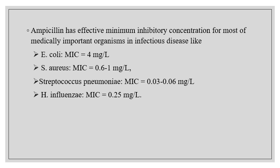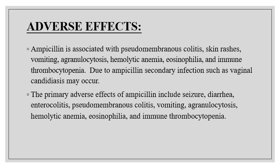Ampicillin has effective minimum inhibitory concentrations for most organisms. For E. coli, the MIC is 4 mg/L. For Staph aureus, the MIC is 0.6 to 1 mg/L. For Streptococcus pneumoniae, MIC equals 0.03 to 0.06 mg/L. For H. influenzae, MIC equals 0.25 mg/L.